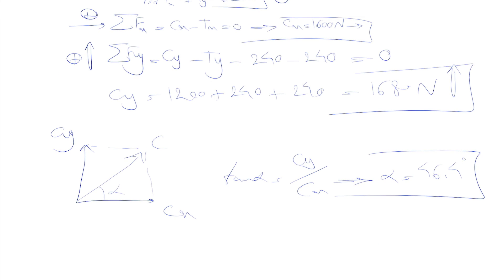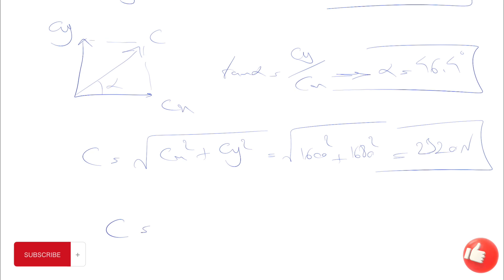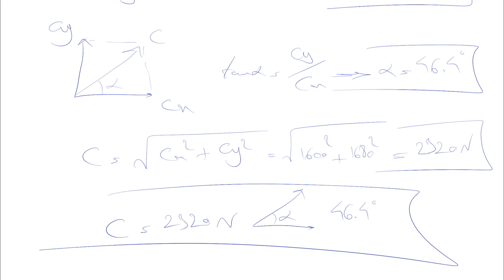That's all we need. If we want to find the magnitude, we'll simply have Cx squared plus Cy squared, and that would be 2320 newton for C. At the end, we can show C as the magnitude 2320 newton, and the angle will be the alpha that we found in here, which was 46.4 degrees. This will be the final answer for part B.